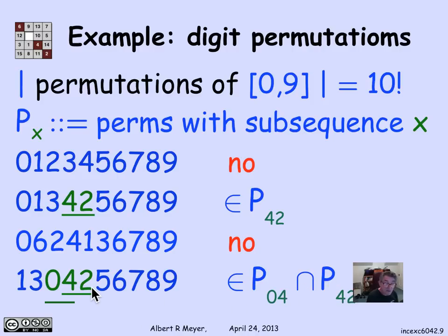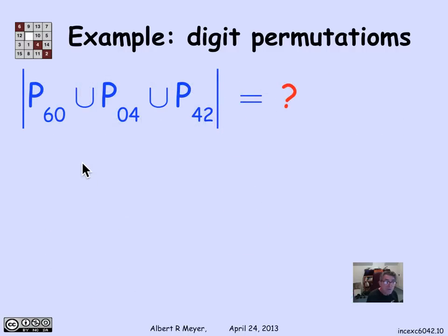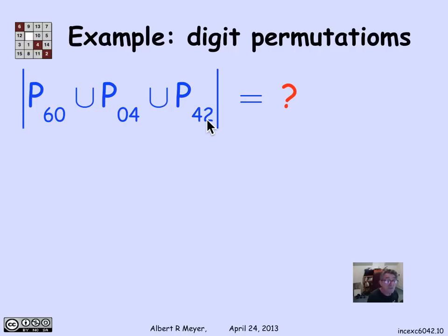What we're really asking for is the size of the union of three sets: P60, P04, and P42 — the set of sequences having a 6,0, union those having a 0,4, union those having a 4,2. As illustrated, these sets are not disjoint. To solve this, we need inclusion-exclusion for three sets rather than two, which is slightly more complicated.